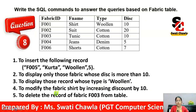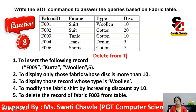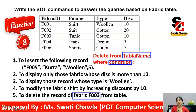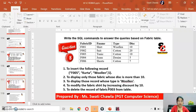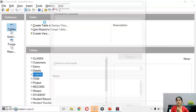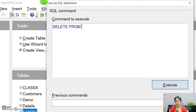Now see the last part: to delete the record of fabric F003 from the table. The DELETE command syntax is: DELETE FROM table_name WHERE condition. Write: DELETE FROM fabric WHERE fabric_id = 'F003'. Go to Tools and then SQL, and write this command.